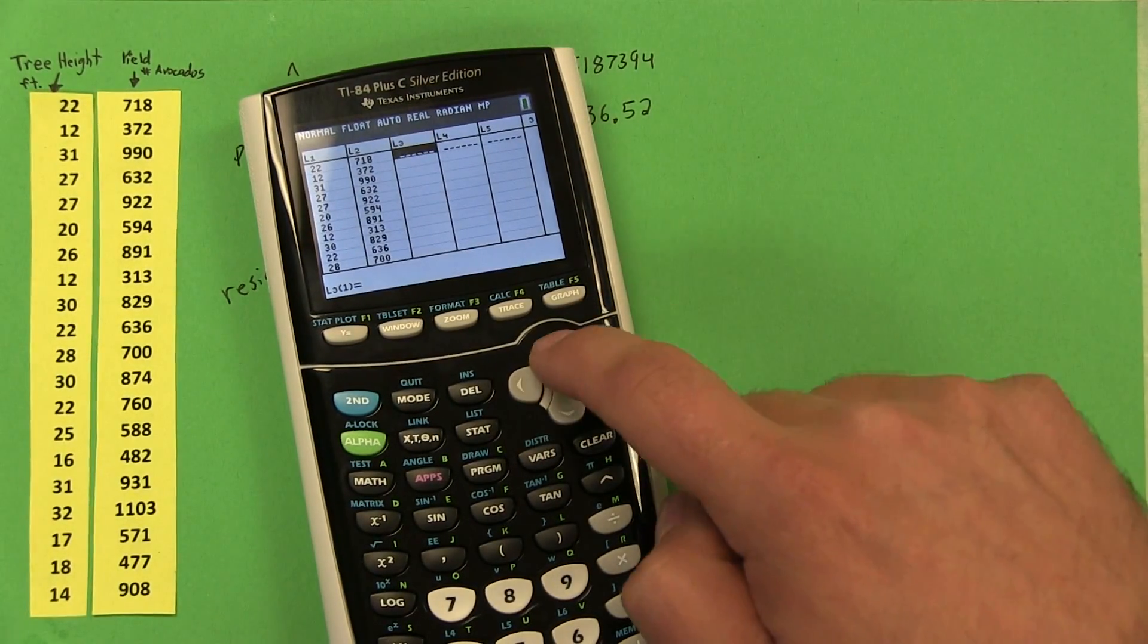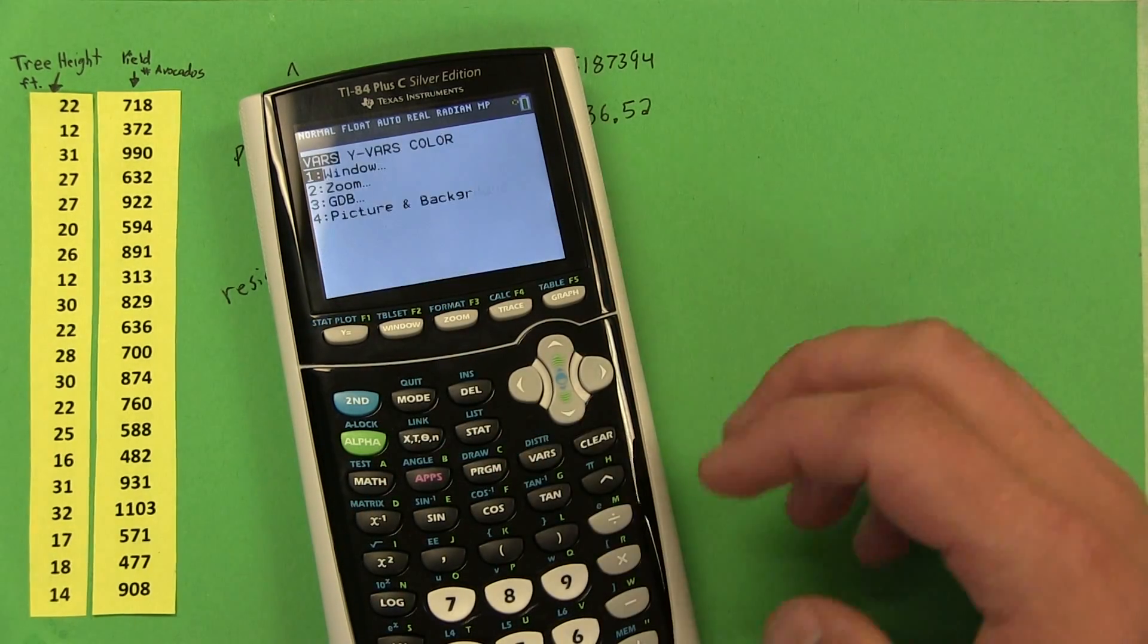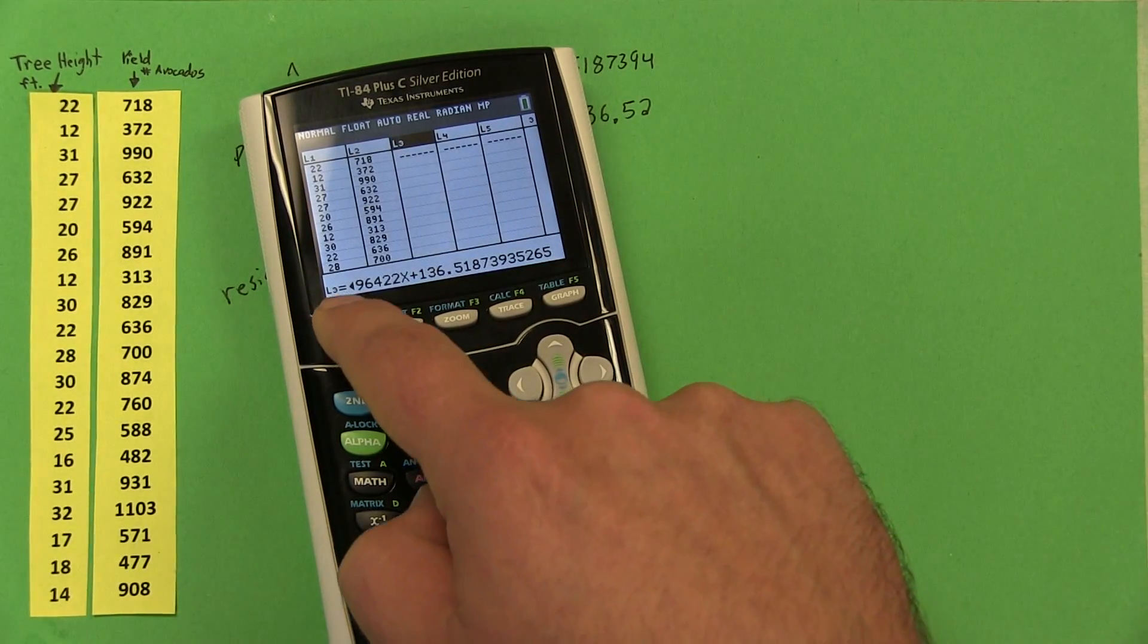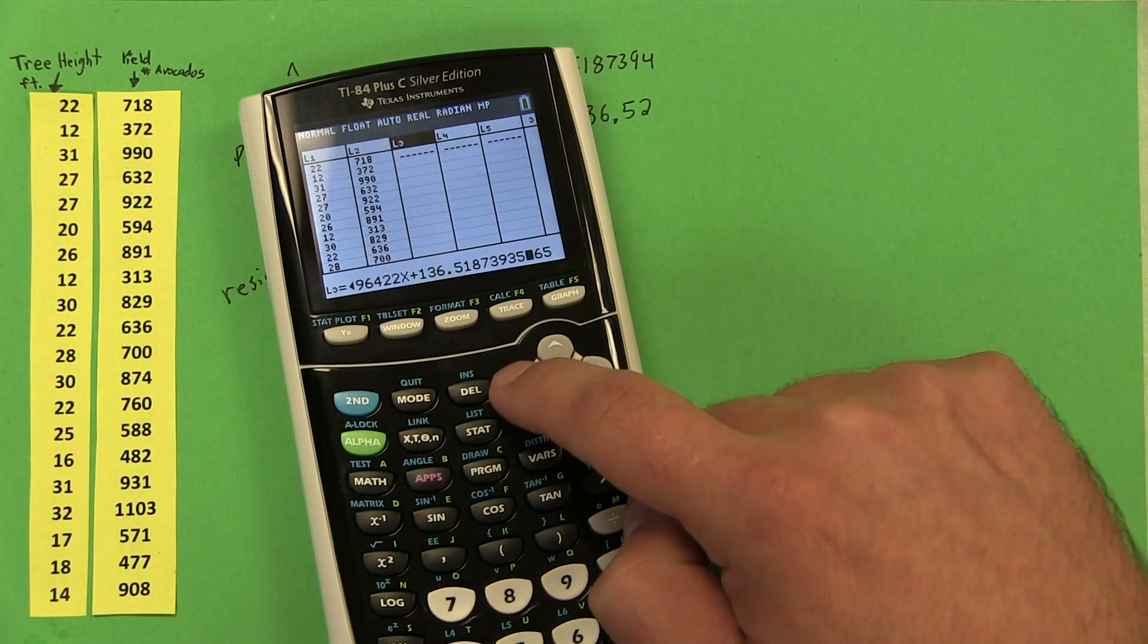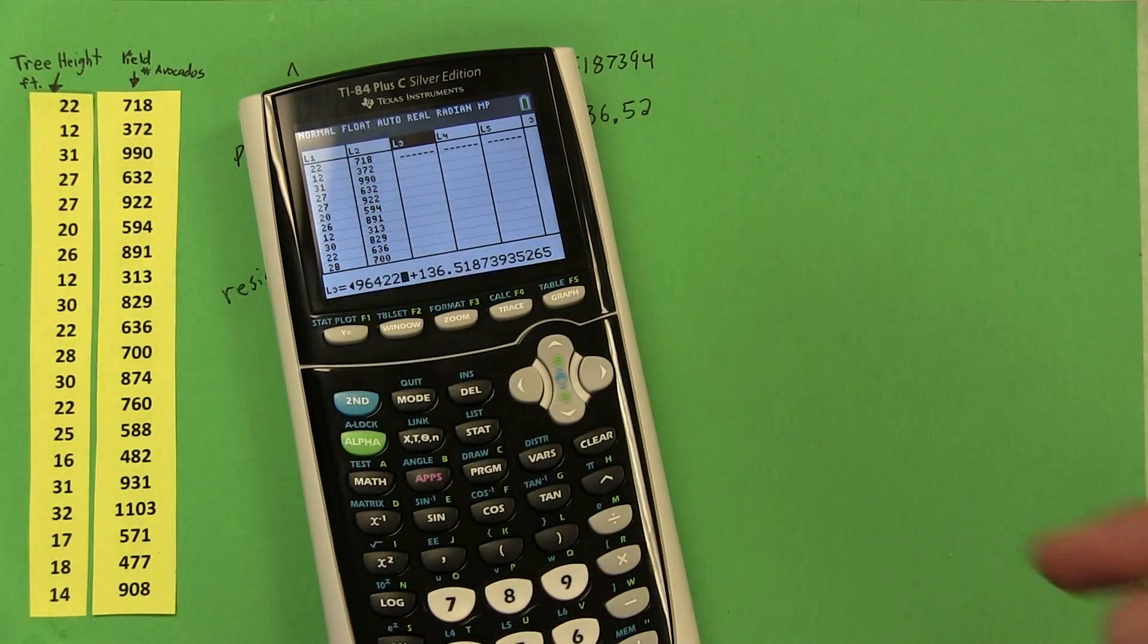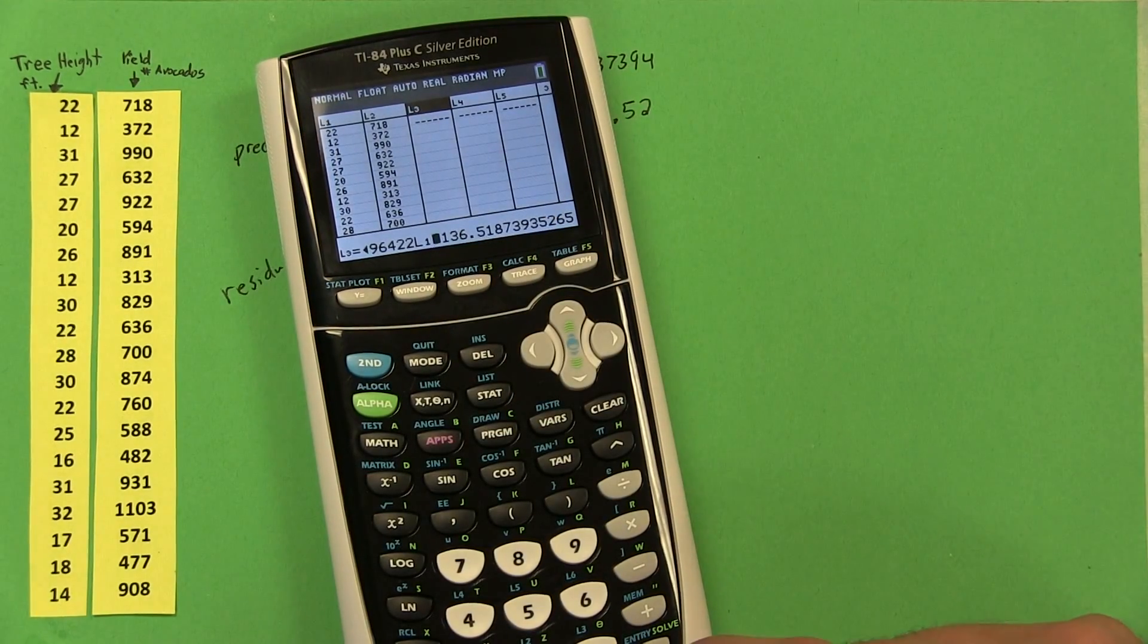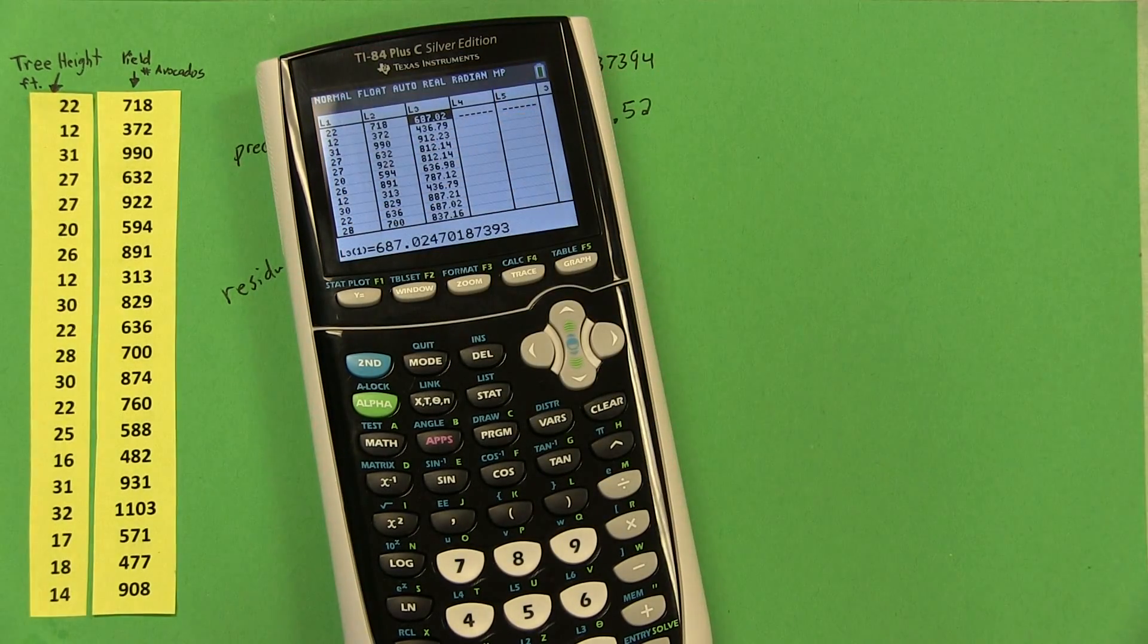If you press, first scroll up so L3 is highlighted and you can type into this little bar down here. If you press vars and you go to statistics and scroll over to equation, the first option is regression equation. So what it just did was pasted the regression equation right in to that top heading right there. But before I do anything, I'm going to scroll over to where X is. What I want to use for X is my tree height, list 1. So if you press 2nd and the number 1, that will paste a list 1 right there. Now when I press enter, what my calculator is doing is calculating the predicted yield for all of these heights listed in list 1.